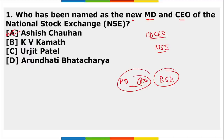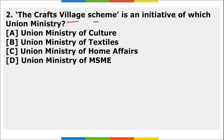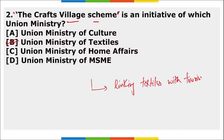Next MCQ: The Craft Village Scheme is an initiative of which Union Ministry? The answer is the Union Ministry of Textiles. The aim of the Craft Village Scheme is to develop handicrafts as a sustainable livelihood option for artisans in clusters. It is an initiative of the Union Textile Ministry for linking textiles with tourism in order to promote more tourism.